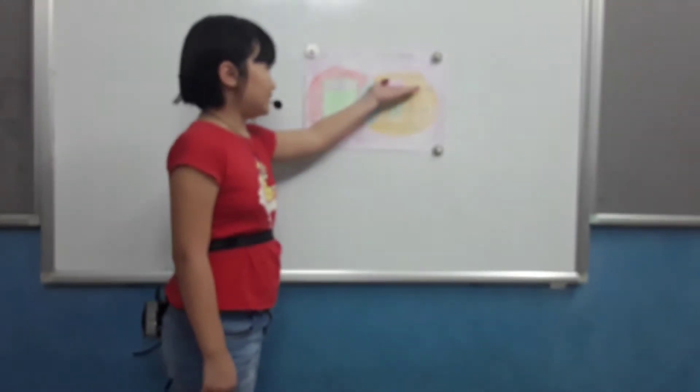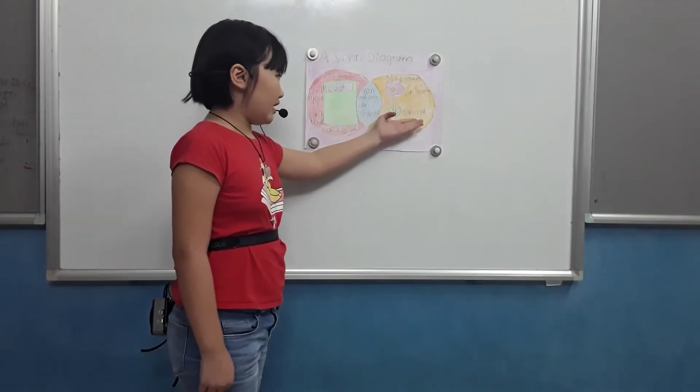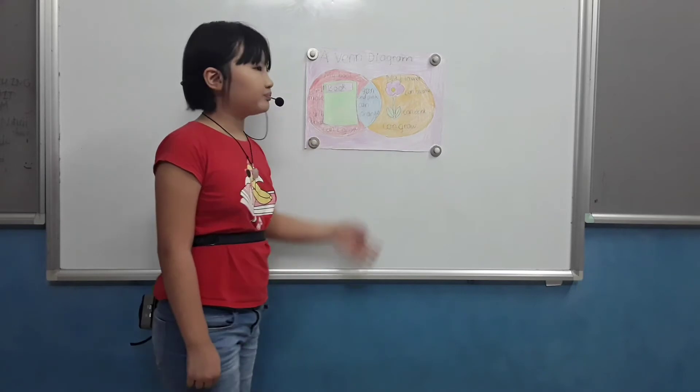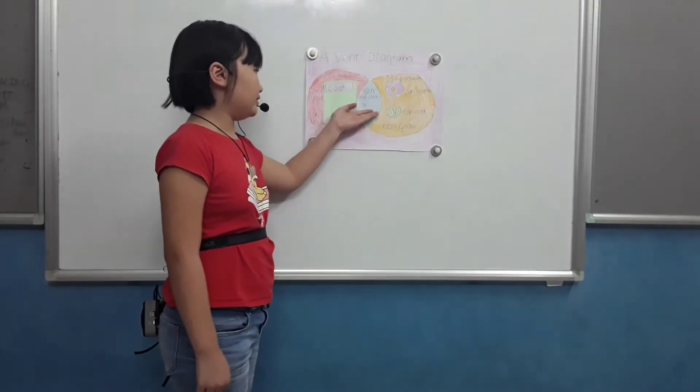My flower is a living thing. It can breathe, can drink, and can grow. They are both green and pink, and they can change too.